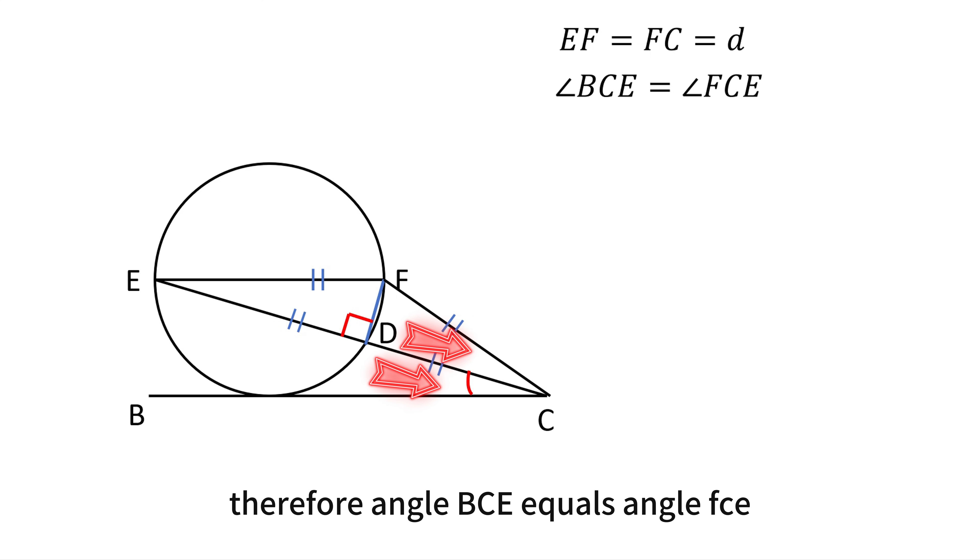Therefore, angle BCE equals angle FCE. We still need to use the tangent condition. Let us drop a perpendicular from F to line BC, calling the foot point N.